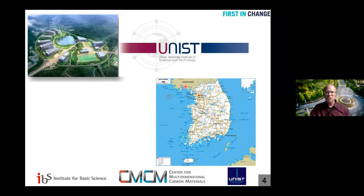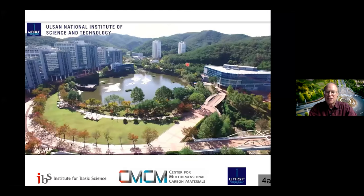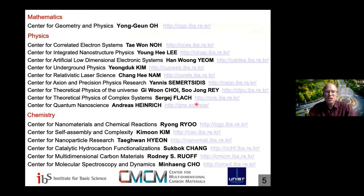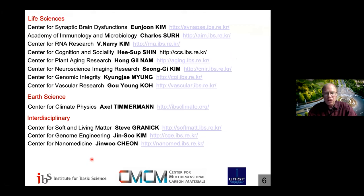Our university is about 10 years old, located in South Korea. It's the fourth Institute of Science and Technology in South Korea — you've probably heard of KAIST, and there's also JIST in Gwangju, DIJIST in Daegu, and now UNIST in Ulsan. The Institute for Basic Science has about 30 centers located throughout Korea, covering math, physics, chemistry, life sciences, earth science, and interdisciplinary fields. The goal of IBS is something akin to the Max Planck Institute — to really embed long-term basic science in Korean culture.